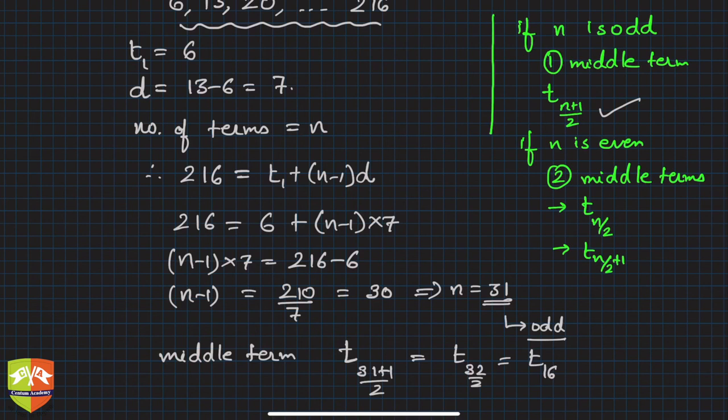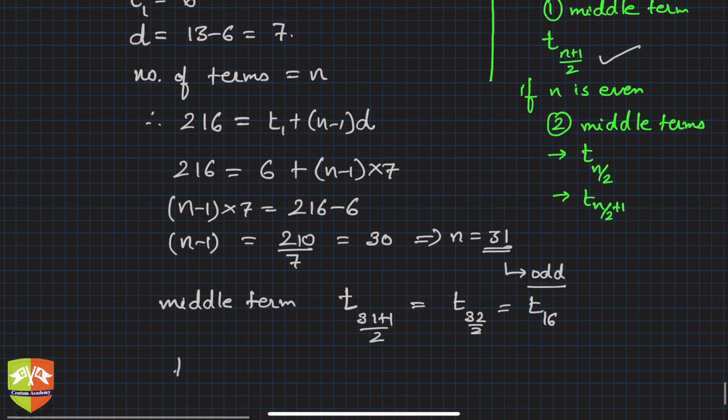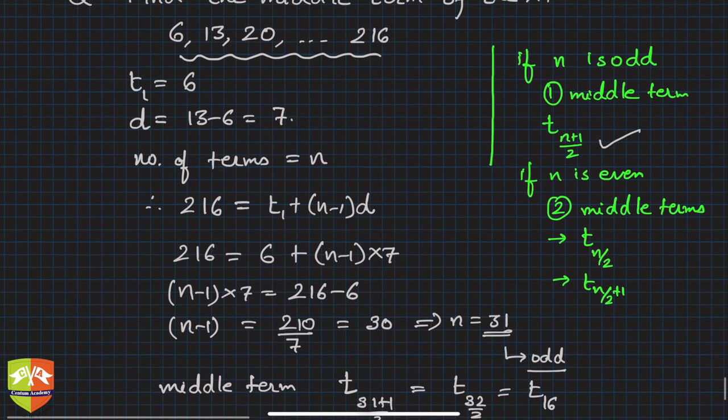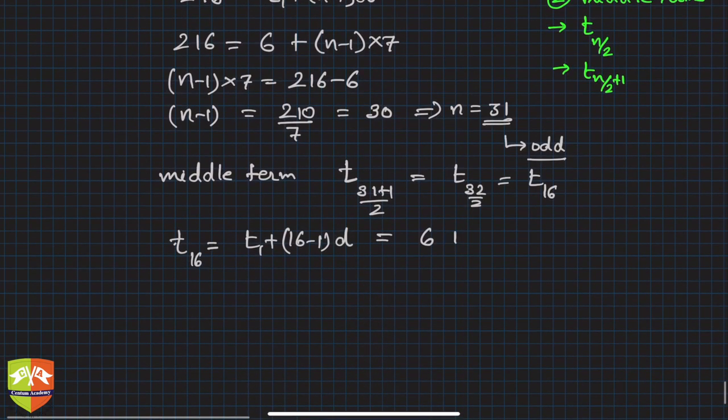Let's find the 16th term. t16 = t1 + (16-1) × d. t1 was 6, and 16 minus 1 is 15. d is 7, so 6 + 15 × 7 = 6 + 105. So the answer is 111.